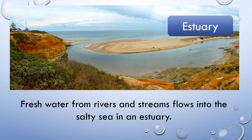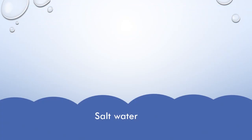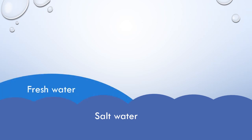Fresh water from rivers and streams flows into the salty sea in an estuary. When the fresh water from the river meets the salty sea water, it rises up above the sea water.